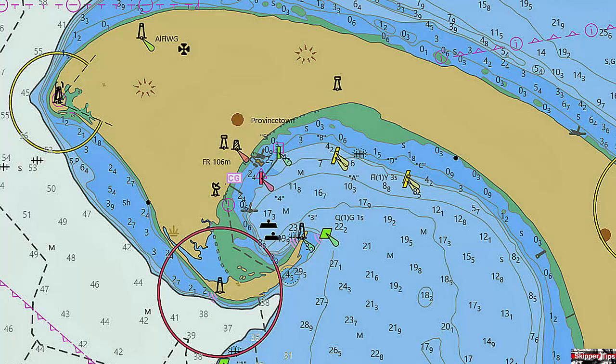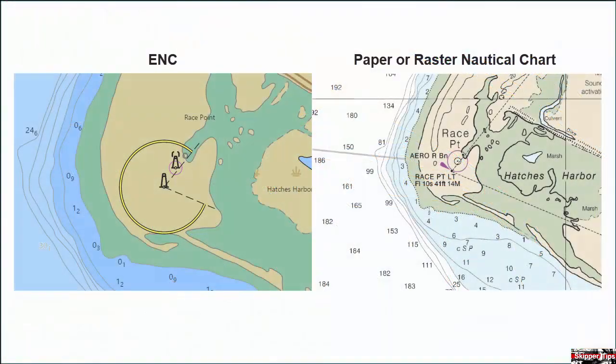Today we'll take another look at some of the significant differences between paper or raster nautical charts and ENC. ENC charts provide high resolution and allow you to control much of the information displayed. Here off of Cape Cod, Massachusetts, you see an ENC chart to the left and a paper or raster nautical chart to the right. Both show the same area, but notice how the ENC chart shows much less clutter than the raster image.